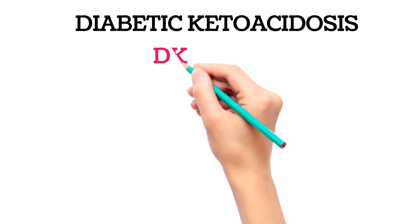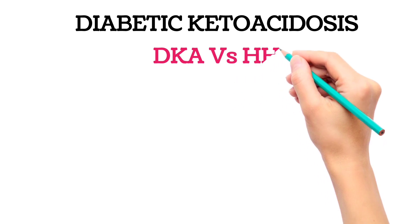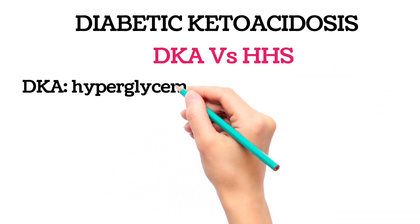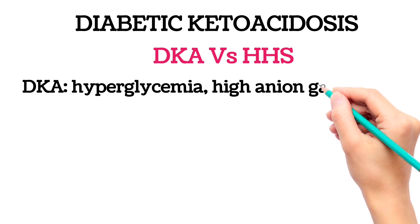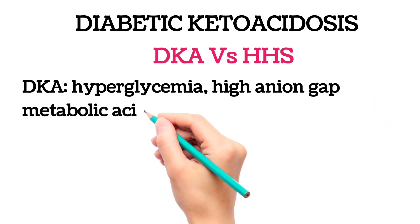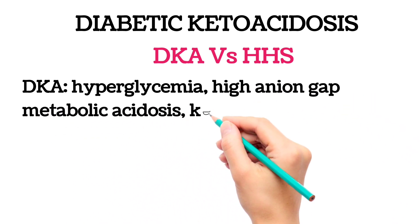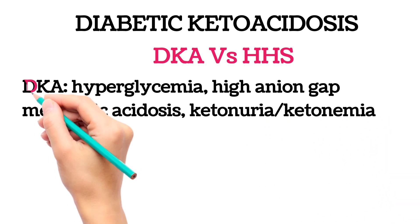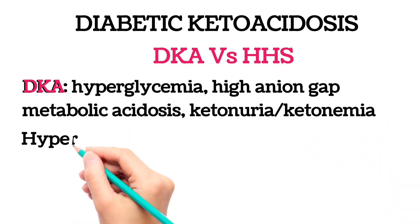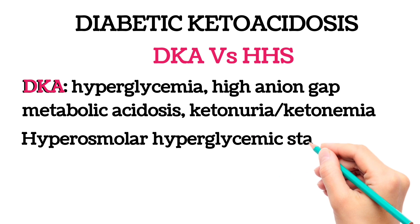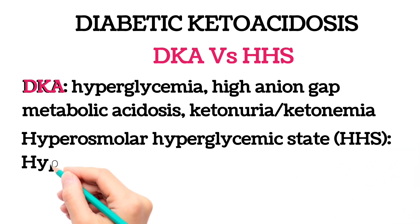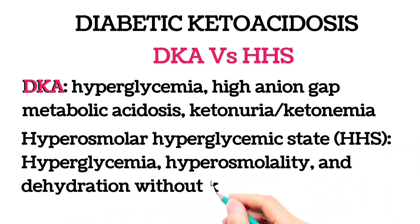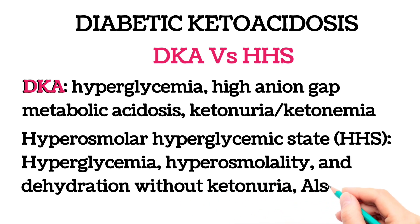Diabetic Ketoacidosis versus Hyperosmolar Hyperglycemic State: DKA presents with hyperglycemia, high anion gap metabolic acidosis, ketonuria and ketonemia. HHS presents with hyperglycemia, hyperosmolality, and dehydration without ketonuria — also known as Hyperosmolar Non-Ketotic Coma (HONK).